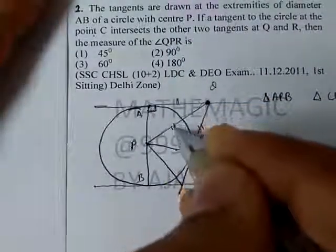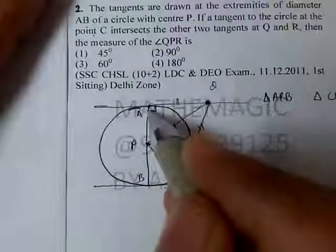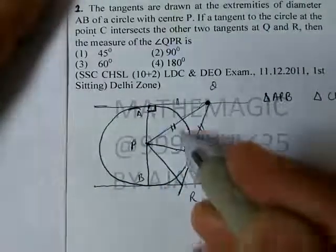Then the side is equal and the hypotenuse is equal. RHS is congruency. This is a right angle, this is a hypotenuse, and this is a side. This triangle is equal to this.